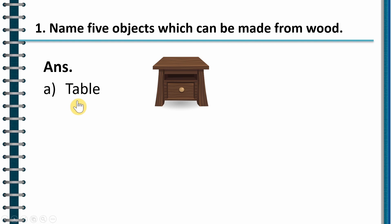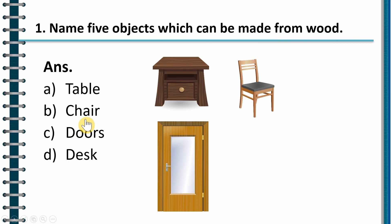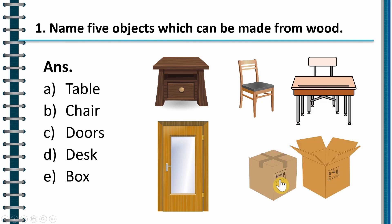The answer is table, as you can see in the picture, then chair, doors, desk and box. You can see the pictures corresponding to these words like chair you can see over here, door can be seen here, desk can be seen here and box can be seen here.